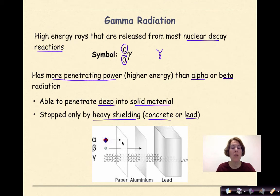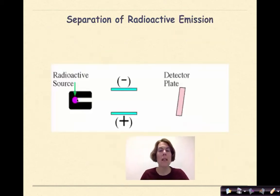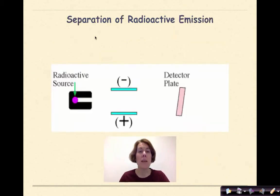Here we have an overall comparison of penetrating power: alpha particles have the smallest penetrating power, beta particles have more penetrating power, and gamma radiation has the most penetrating power.